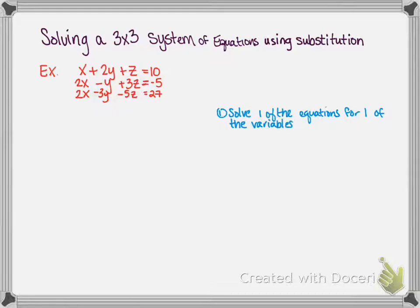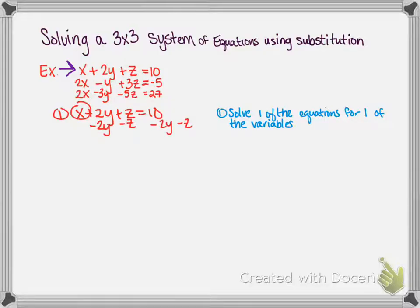Our first step is to solve one of the equations for one of the variables. It doesn't matter which equation or which variable we choose, but certain choices are easier. For example, this first equation has two variables without a coefficient. I am going to solve for x — I could just as easily have solved for z since z also has no coefficient. I will subtract 2y and subtract z from both sides, giving x equals 10 minus 2y minus z.